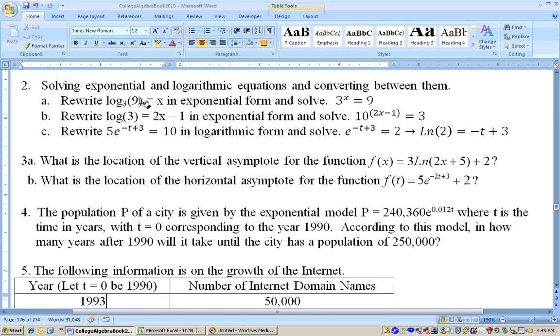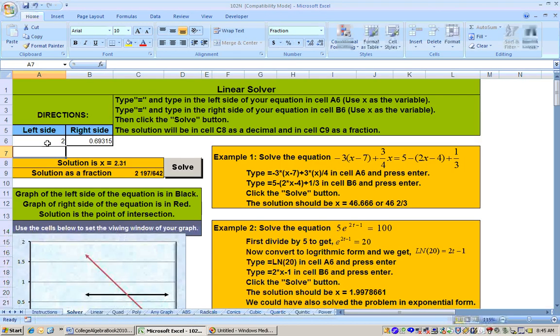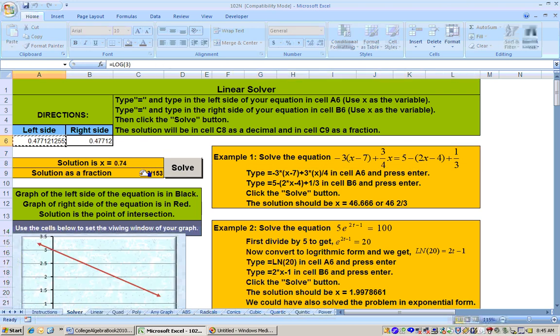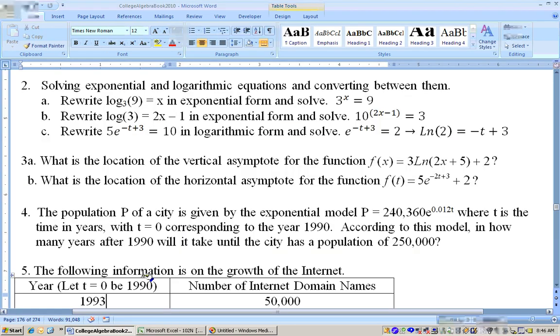Logarithmic form is the best way to answer that because it brings the variable out of the exponent. Next problem says rewrite log of 3 equals 2x minus 1. Now, if you see log without a subscript written on there, then the base is assumed to be 10. So rewriting this, it would be 10 raised to the 2x minus 1 equals 3. But again, the best way to solve this problem is in this logarithmic form because the variable is not up in the exponent. So we would just say log of 3, and we can do that by typing equals log of 3. The base is assumed to be 10 if you don't put it in. And then over here was the other side of that equation, which is equals 2 times x minus 1, hit enter, click solve, and we get 0.74.